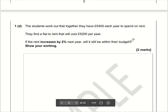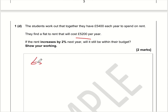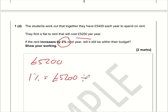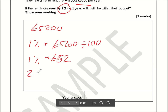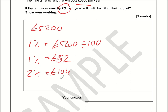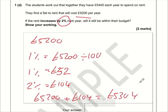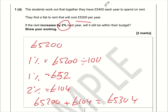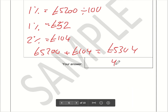For part D, the flat is £5,200 per year. I'm going to work out 2% of this amount. 1% is 5,200 divided by 100, so 1% is £52. If 1% is 52, then 2% is double that — so £104. Therefore 5,200 plus 104 comes to £5,304. And that is lower than £5,400, so will it still be within budget? The answer is yes.